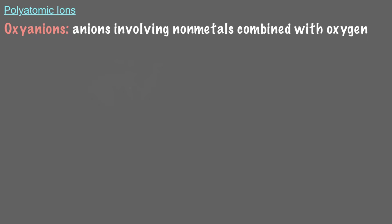Hypochlorite is what we call an oxyanion, anions involving nonmetals combined with oxygen. We have special rules for naming such ions. If a nonmetal forms 2 possible anions with oxygen, the one with the fewer number of oxygens has the suffix ITE, and the one with the greater number of oxygens has the suffix ATE.